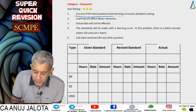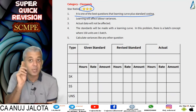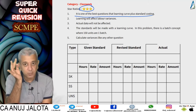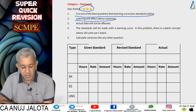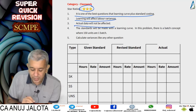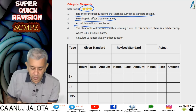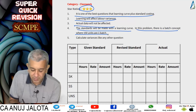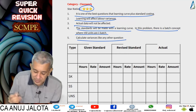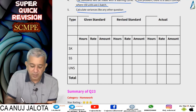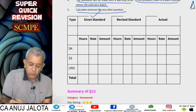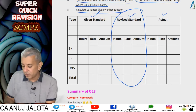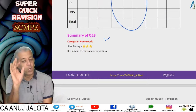This was rated 3 stars — one of the best questions — and similar questions are expected in exams, so the next question (Q23) is kept as homework. Learning curve affects labor variances. Actual data is not affected. Standards are made incorporating the learning curve. In this problem there is a batch concept where 150 units equals one batch. Calculate variances like any other standard costing problem, but build the revised standard using the learning curve percentage.